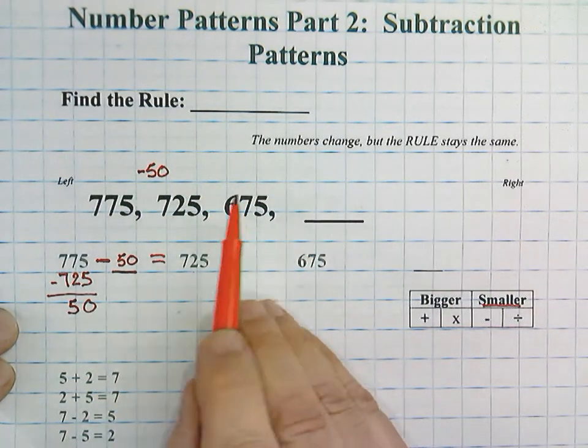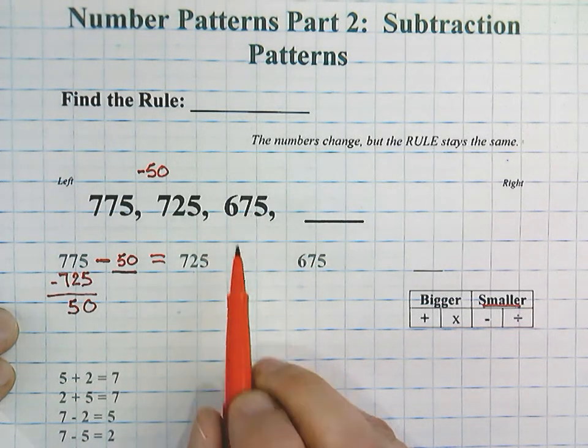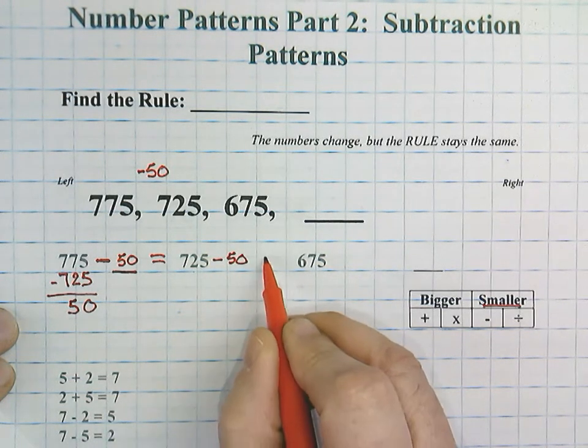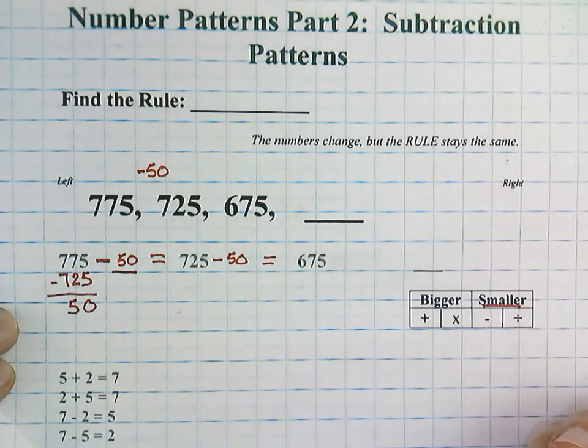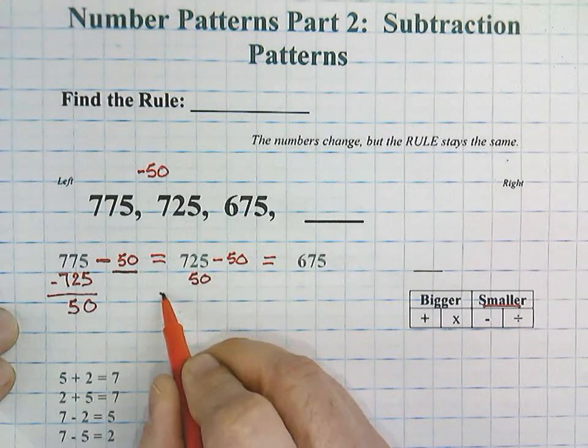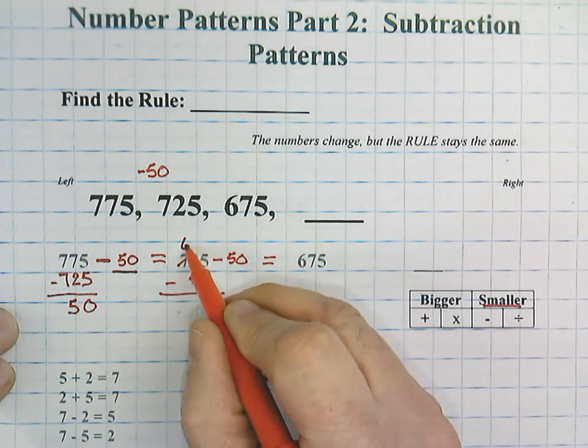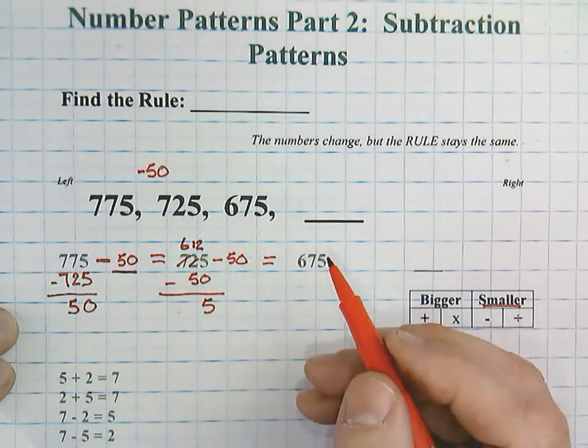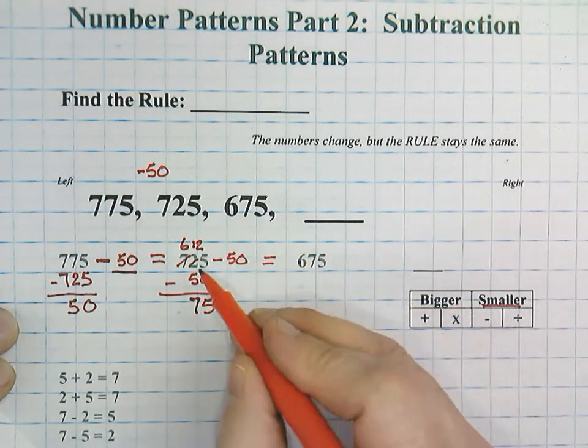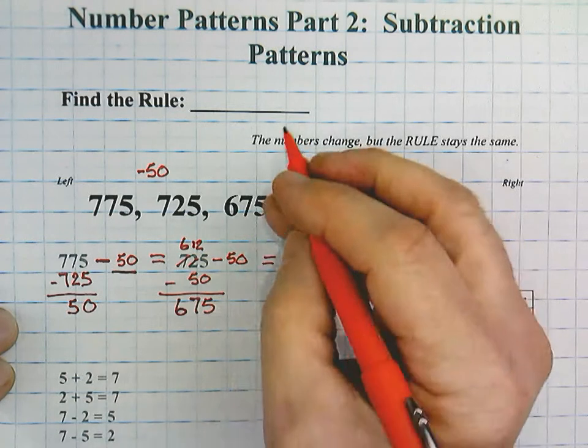Now, remember, the rule stays the same, but we do need to make sure that it's working. So, I'm going to try it between 725 and 675. We would show it the same, 725 minus 50 will equal 675. Well, let's just prove it today on paper. I'm going to put my 50 down here and subtract. 5 minus 0 is 5. I'd have to regroup here. 12 minus 5 is 7. And 6 take away nothing would be 675, and you can see that that definitely checks out.